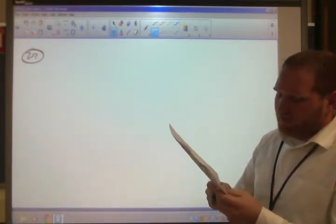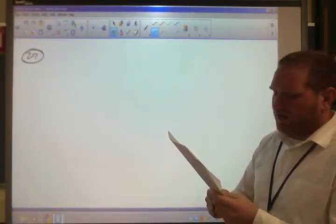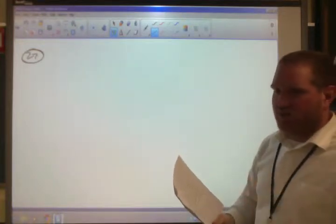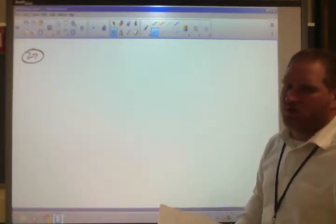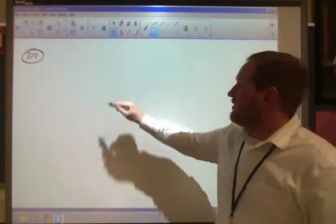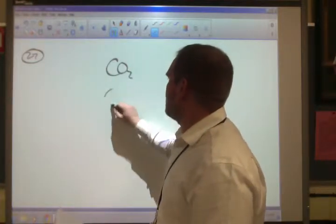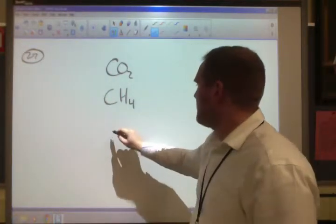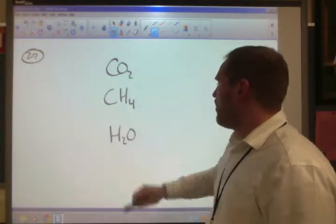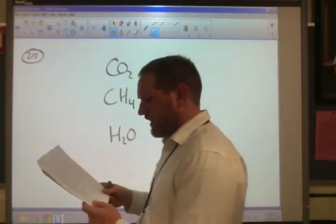27. Name several key greenhouse gases. The main one is CO2. Probably the next most important is CH4, also known as methane. Write this down. CO2, carbon dioxide. CH4, which is methane. And H2O, water vapor. These are the three main greenhouse gases.